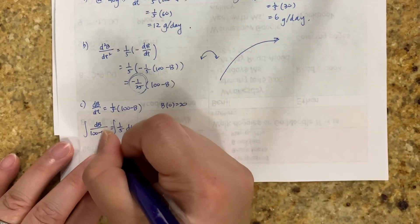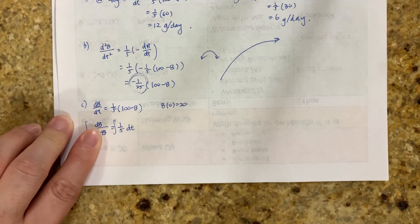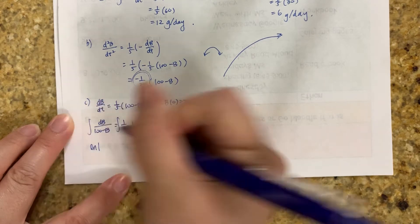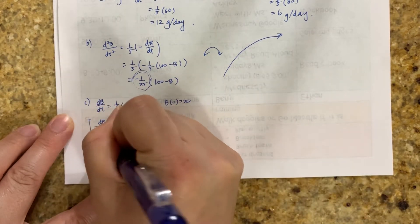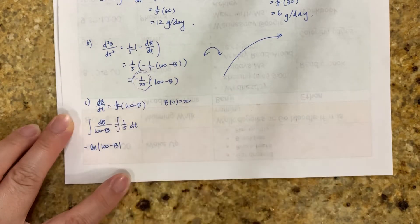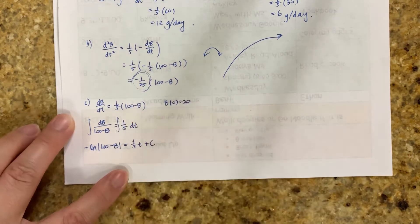Now, this may not look familiar because of the 100, but again, this is really db over b. This is like du over u. So this is natural log. So we have natural log, absolute value of 100 minus b. But don't forget, there's a negative because of b is a negative here. So let's chain rule. So it's 1/5 t plus c.